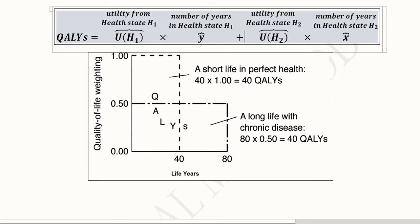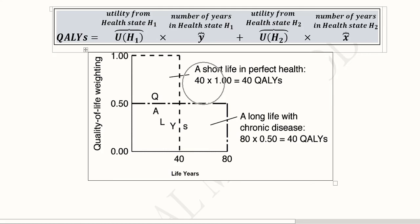We can also make a diagram of QALY. On the x-axis we have life years, and on the y-axis we have the quality of life weighting, ranging from 0 to 1. The maximum age in this example is 80. There are two possibilities: a longer life with a medium level of health at 0.5, or a shorter life with a perfect state of health at 1. So 40 years multiplied by 1 gives a QALY of 40 for the shorter but perfectly healthy life. For the longer life with a chronic disease, 80 multiplied by 0.5 also equals 40.